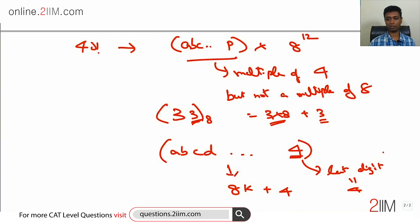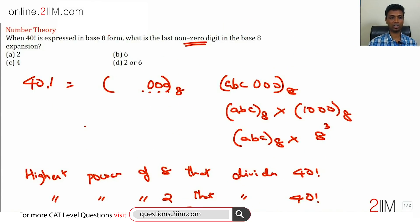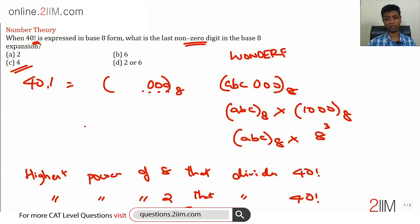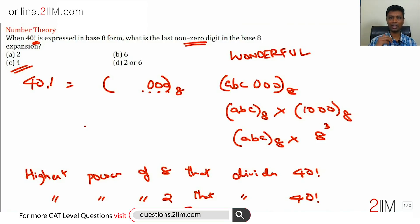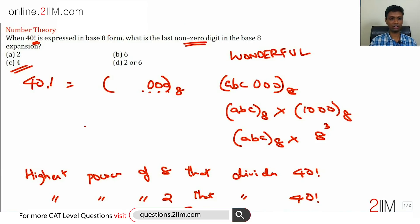So the last non-zero digit in the base 8 expansion of 40 factorial is 4 — an absolutely wonderful and tough question. It gives us a beautiful idea of thinking about last digits in different bases, and practice with 40 factorial. The method: find the highest power of 8 dividing 40 factorial by first finding the highest power of 2, then see what's left over and use that to determine the last digit. A really tough question — go over the solution carefully, as it's great practice for your exam.